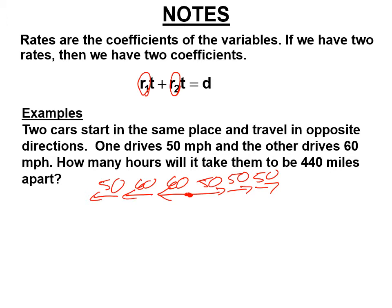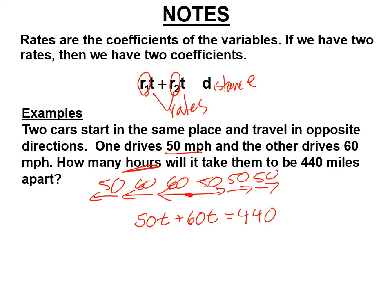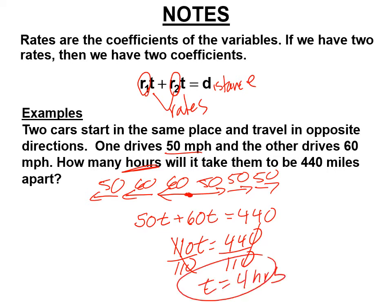You could figure out this problem without an equation, but we want to show you on simple ones how this all works. If you have two rates, we have 50 miles per hour — that's our coefficient. We're trying to find hours, using t for time. And 60 miles per hour is the other coefficient. Total distance d equals rates r times time t, which is 440. Combine your like terms: 110t equals 440. Divide both sides by 110, cross out the zeros, and the time is 4 hours. It'll take them 4 hours to be 440 miles apart.